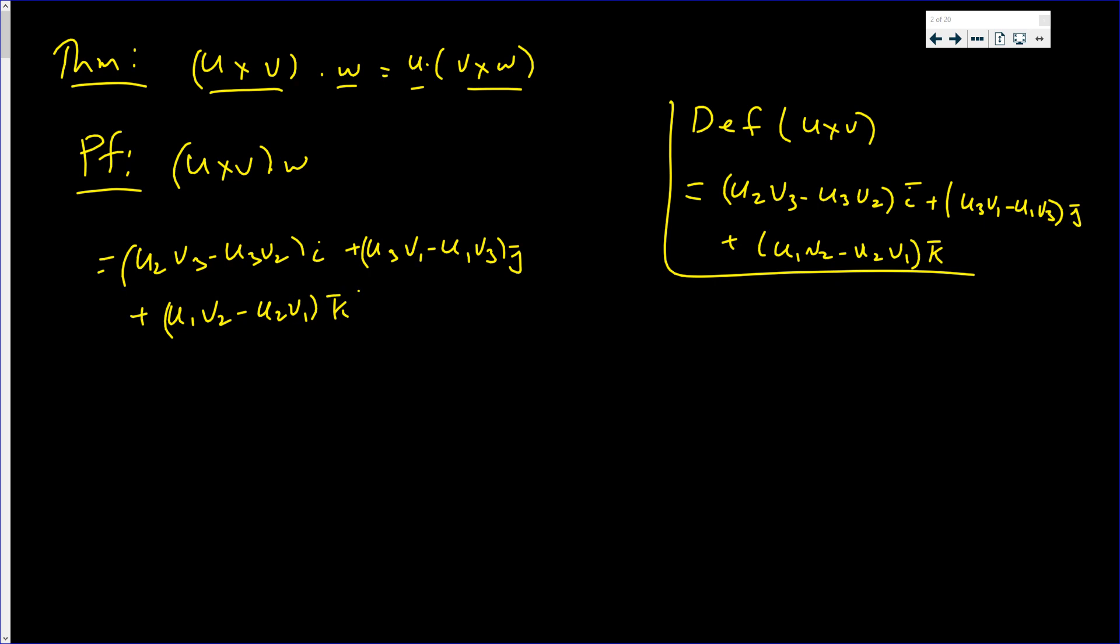And all of this gets dotted with w, which is w1 i plus w2 j plus w3 k. And basically you multiply the two i components and you'll get u2 v3 minus u3 v2